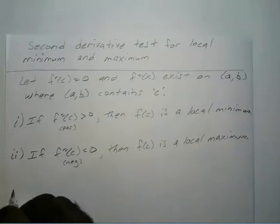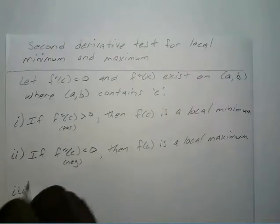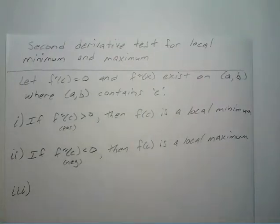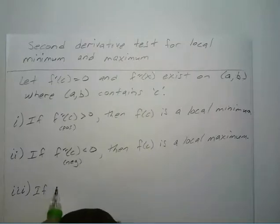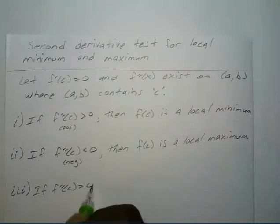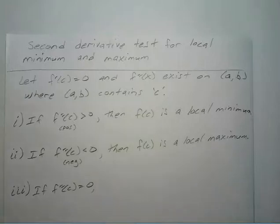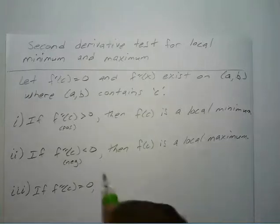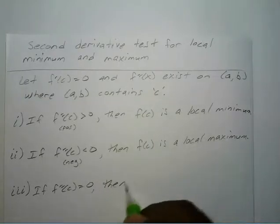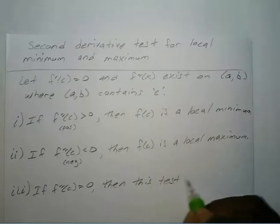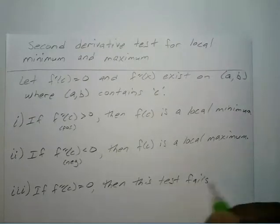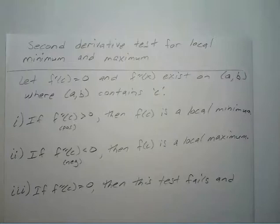Now third is where it gets a little bit tricky. If your second derivative at c is equal to zero, then you can't use this test. This test fails and you must use the first derivative test.